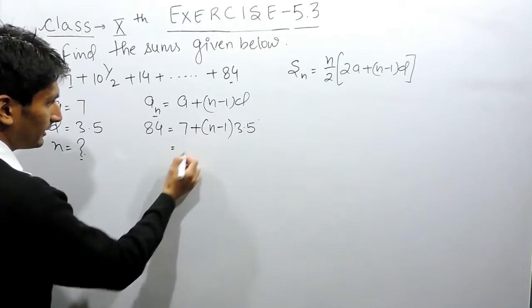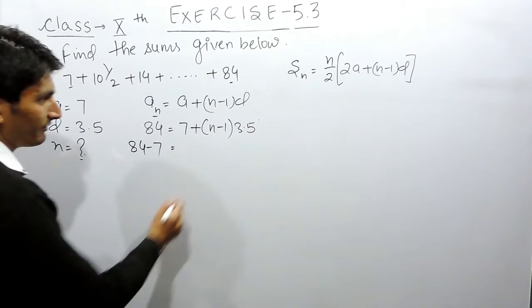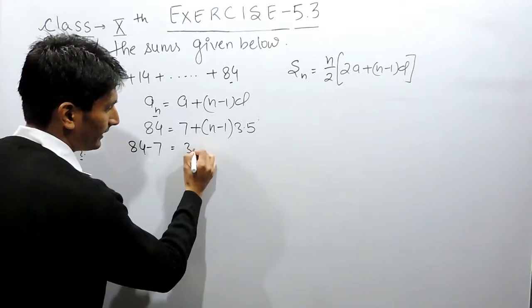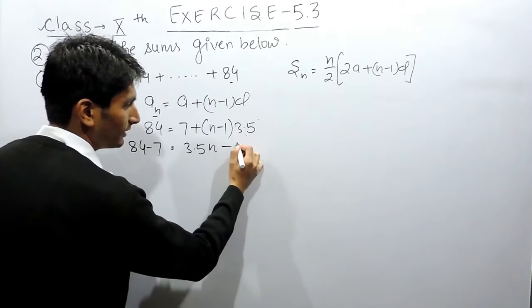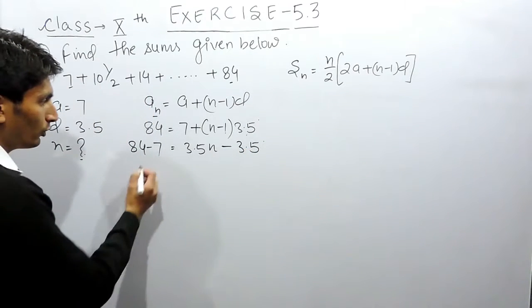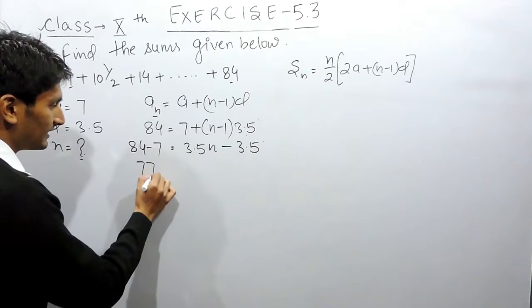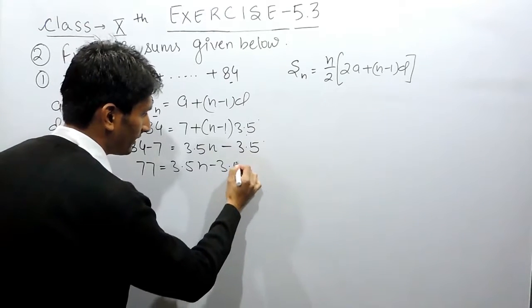Solving this, this can be shifted to this side. This will become 84 minus 7. This when multiplied by n will give 3.5n, and this has to be multiplied by 1, so this will become 3.5 minus. So 84 minus 7 is 77, this is equal to 3.5n minus 3.5.